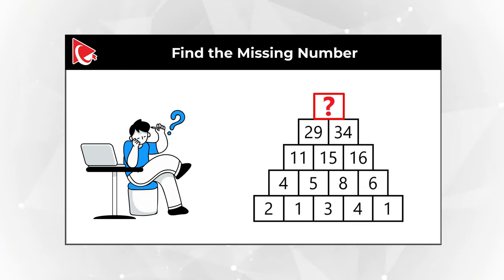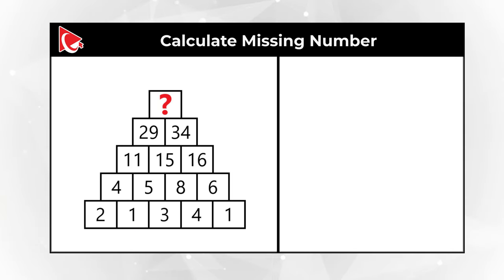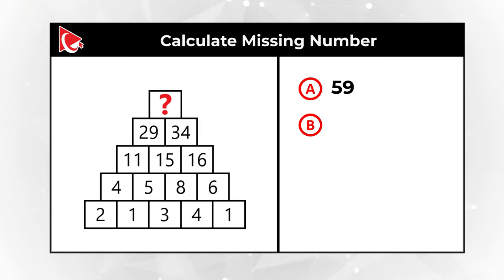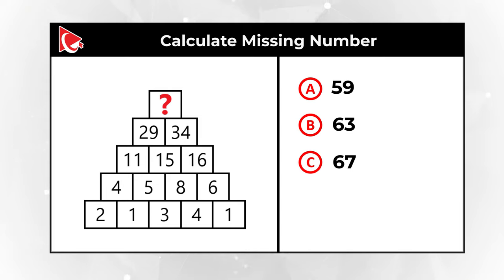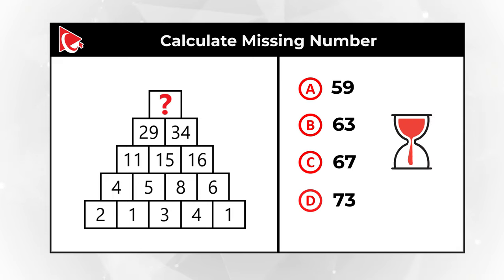You need to calculate the missing number which is in the top row. You have four different choices: Choice A is 59, Choice B is 63, Choice C is 67, and Choice D is 73. Give yourself a little bit of time, maybe 10 to 15 seconds, to see if you can answer this question.